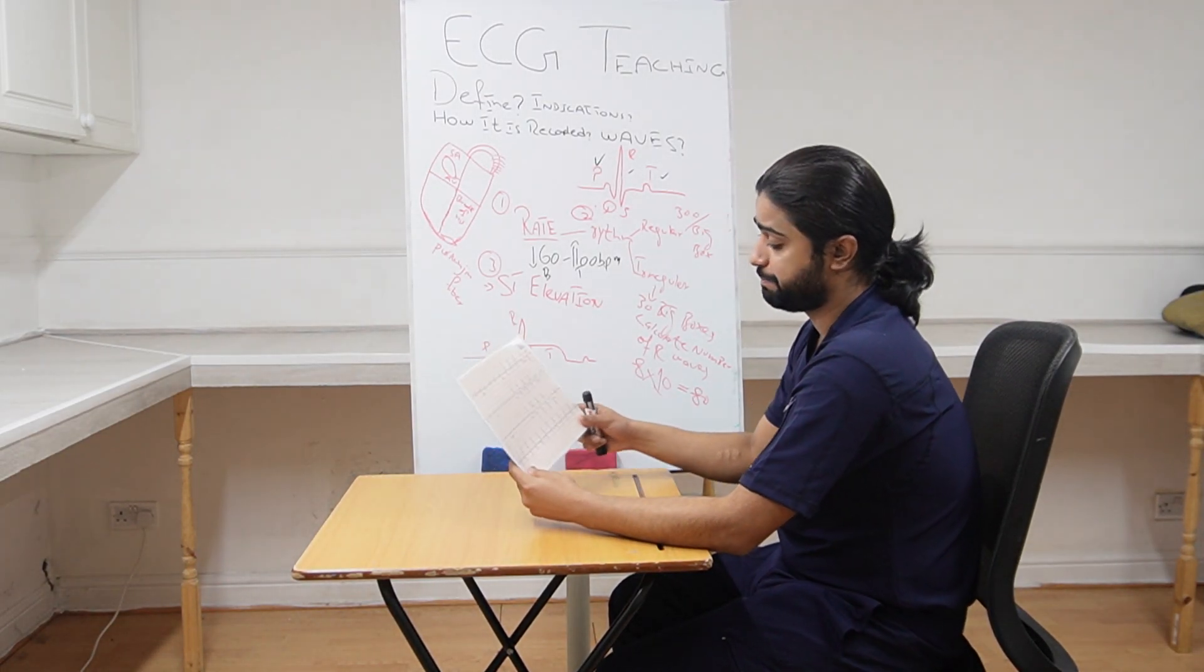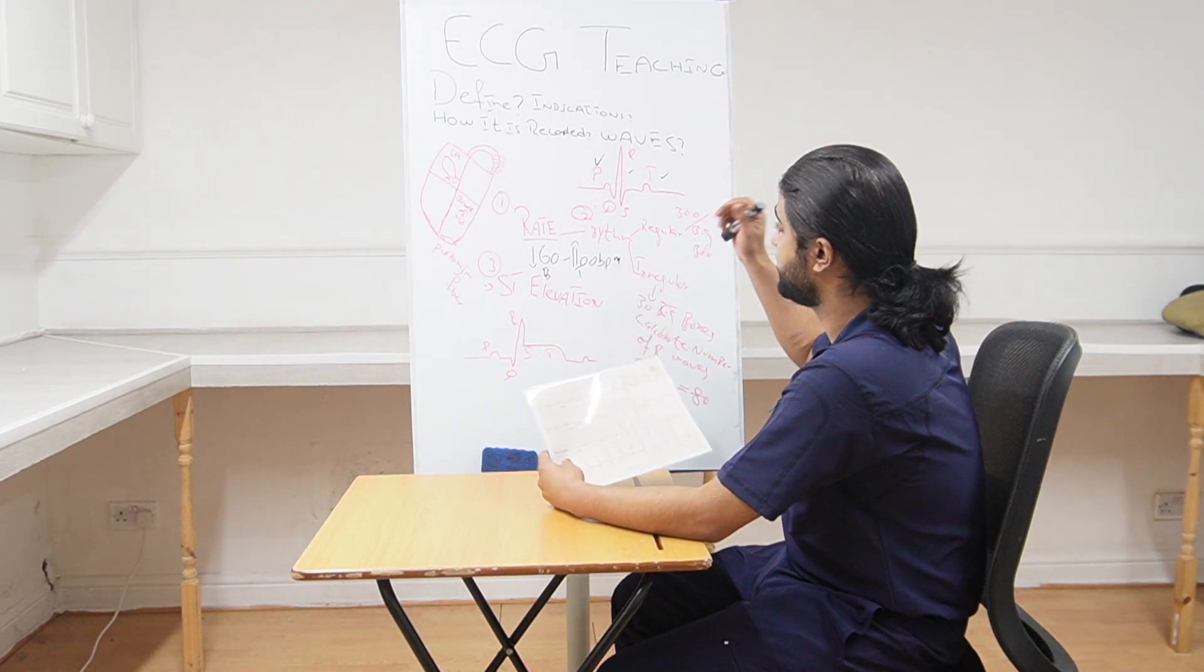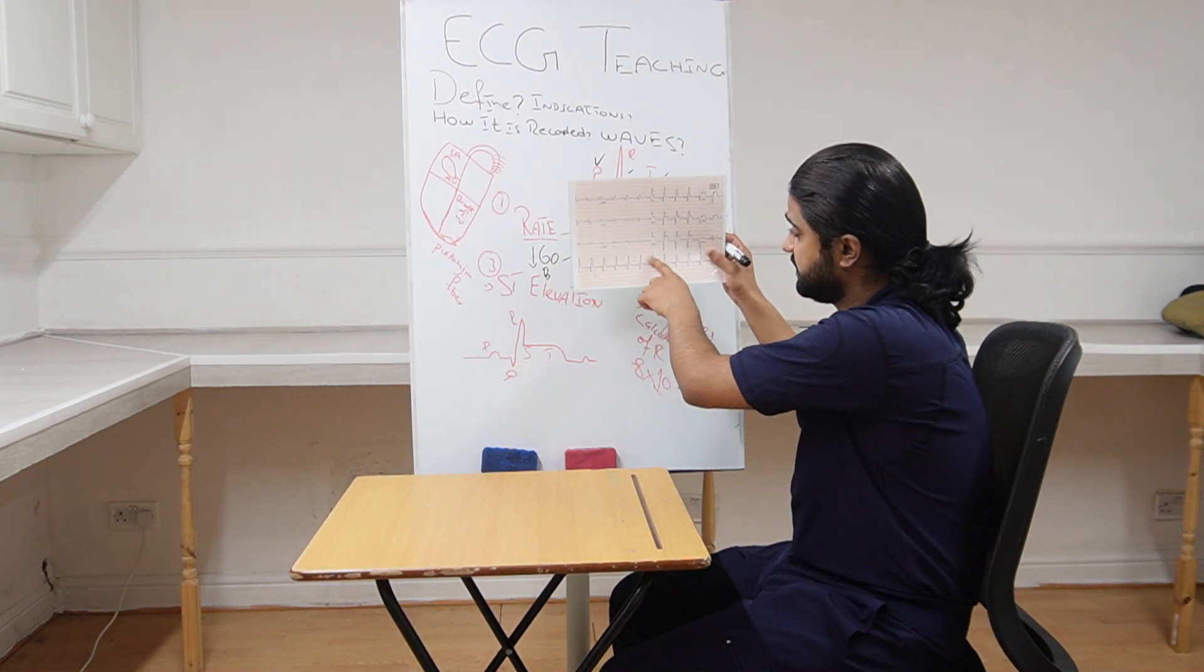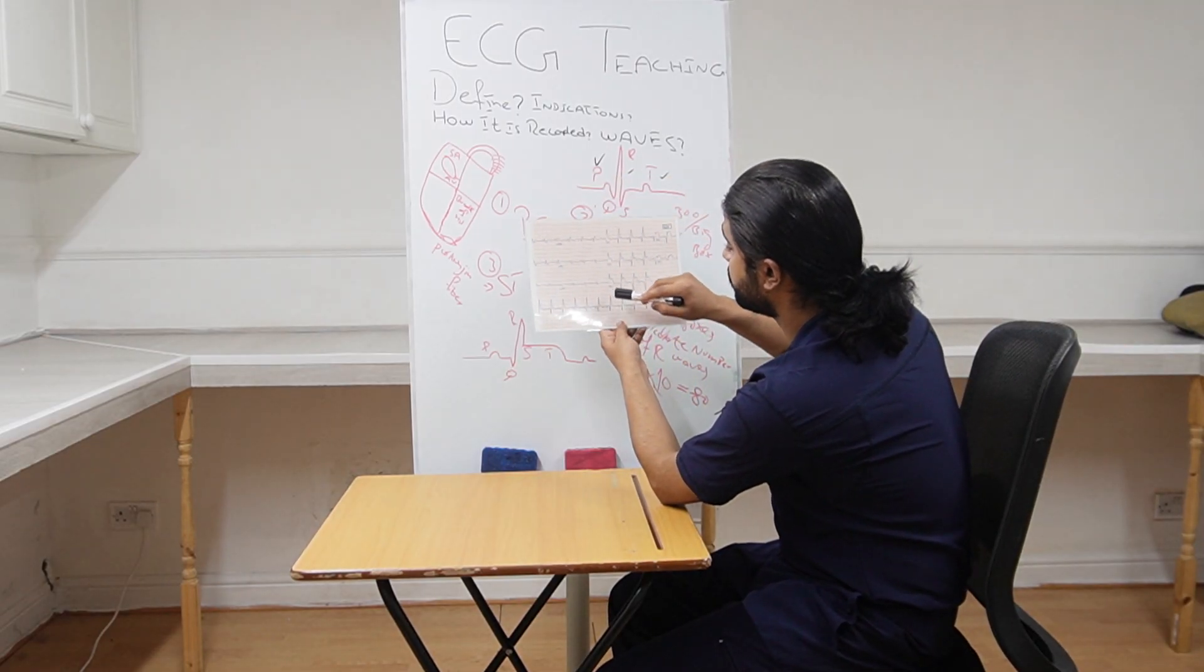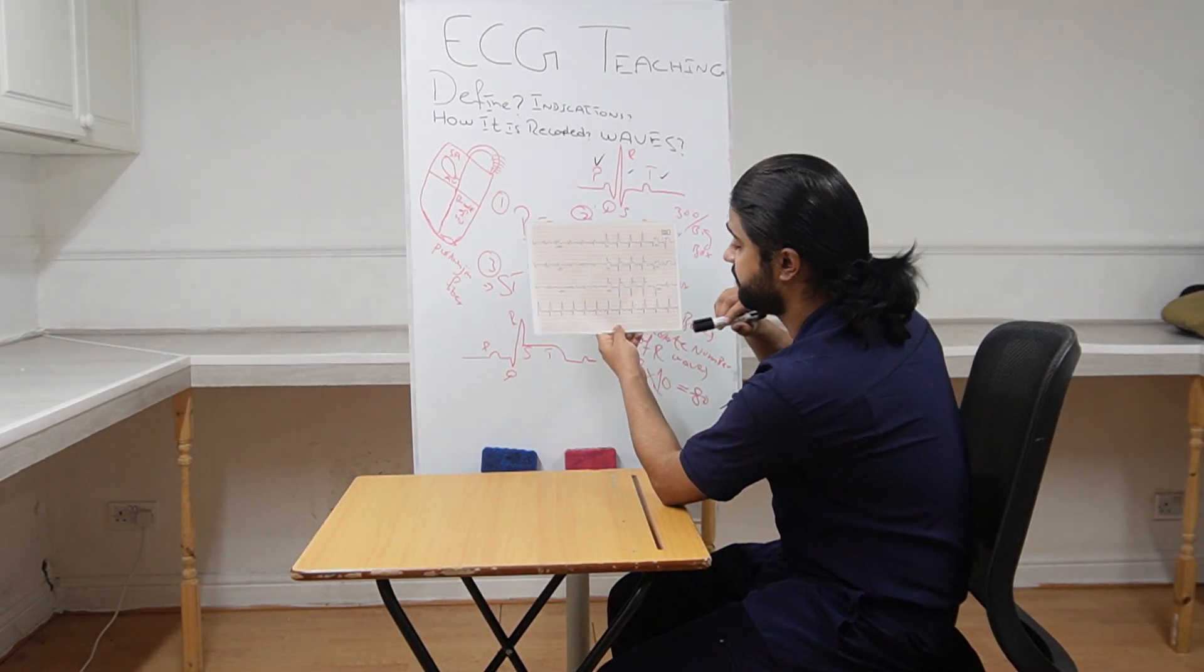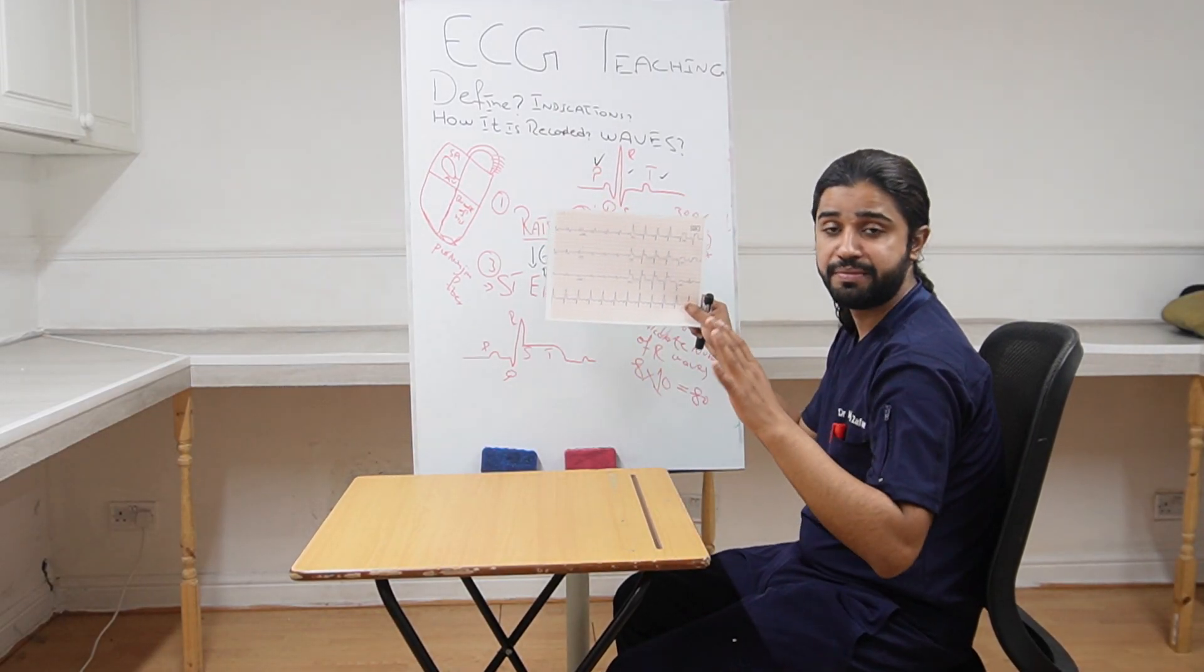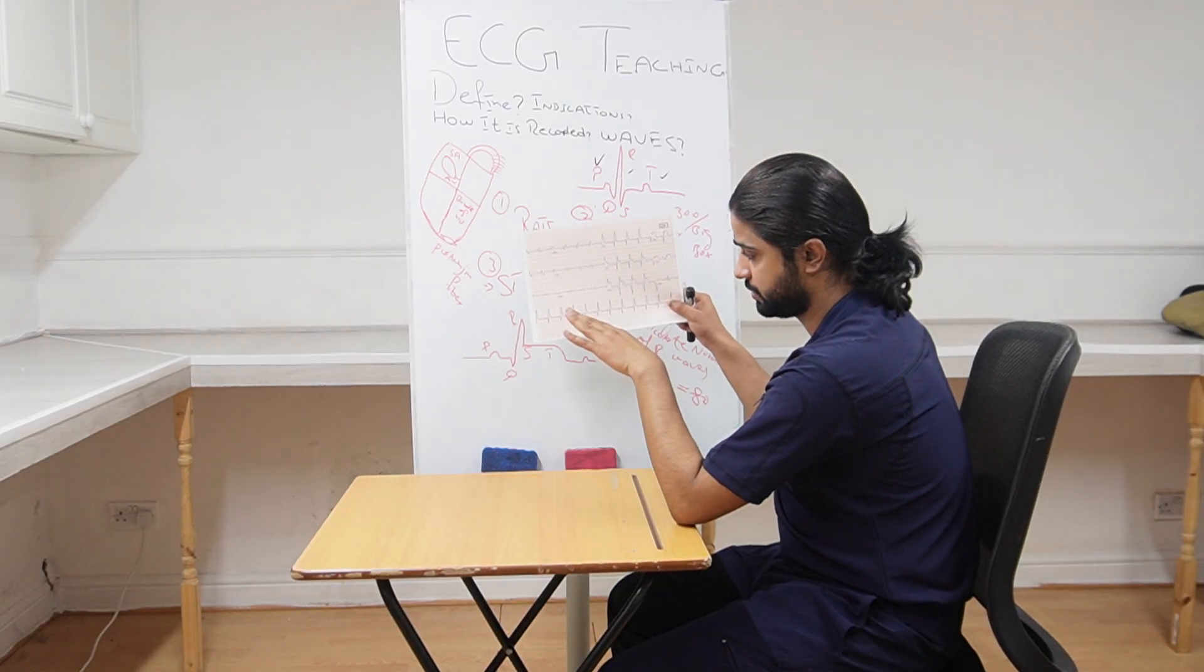You will simply place the paper on the ECG, here on the ECG, and you will then simply calculate the distance between the R waves. If the distance between two R waves is the same, it means the rhythm is regular.